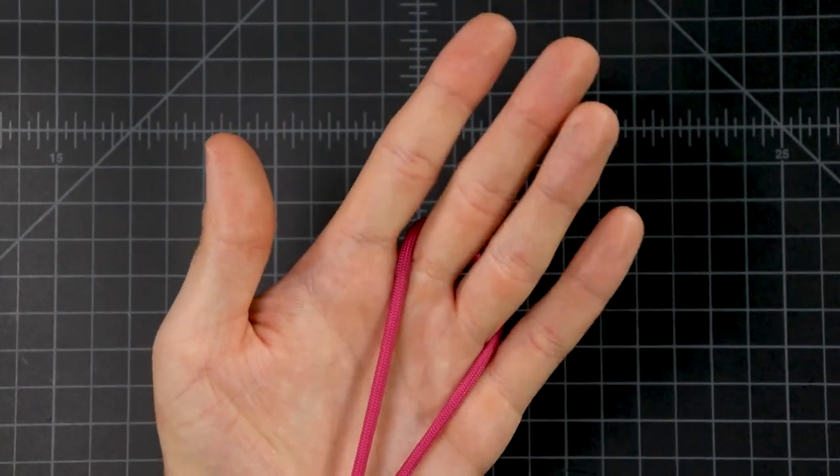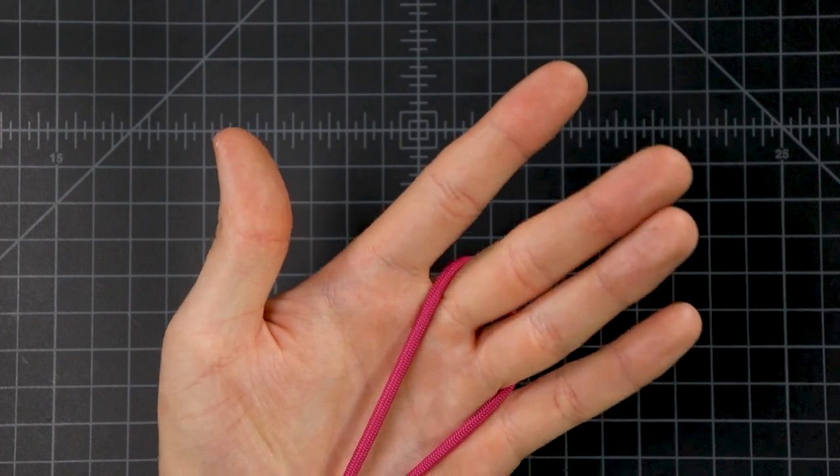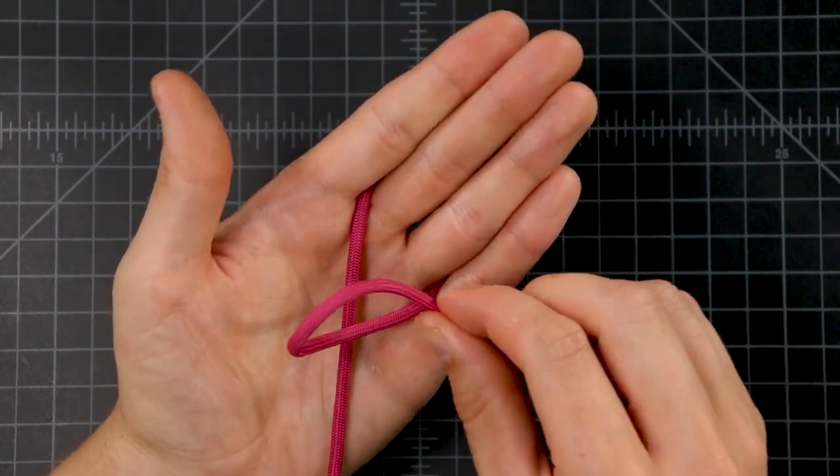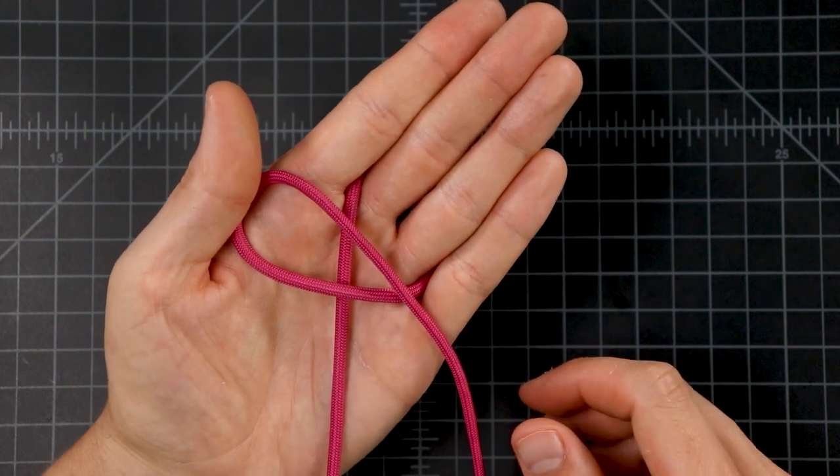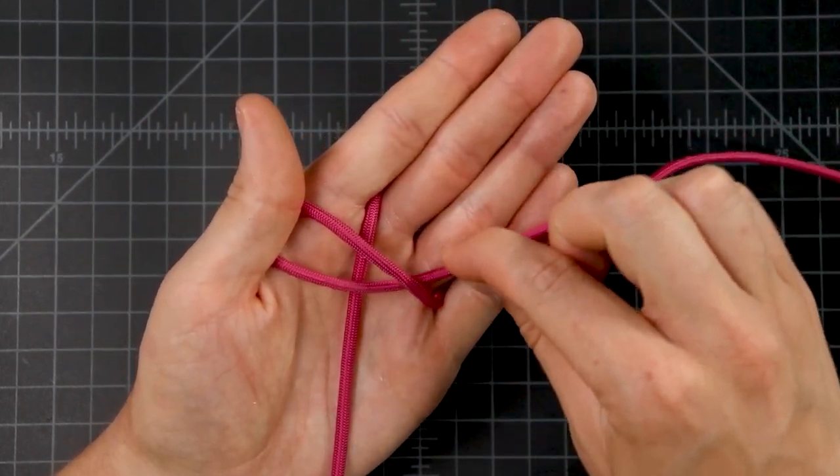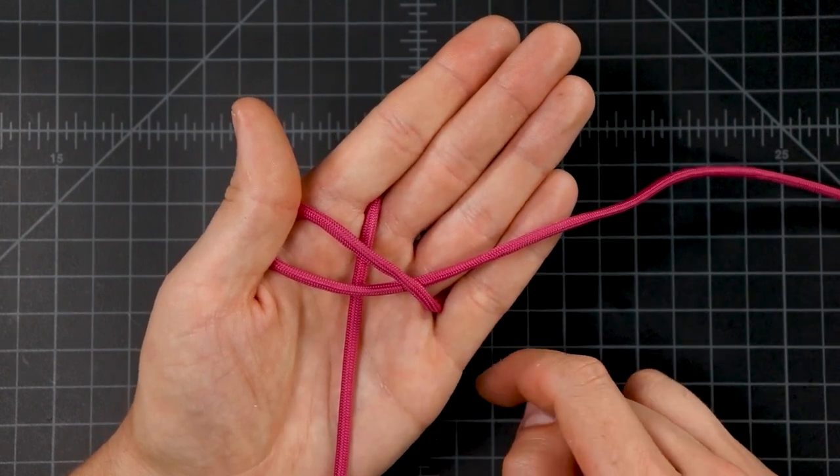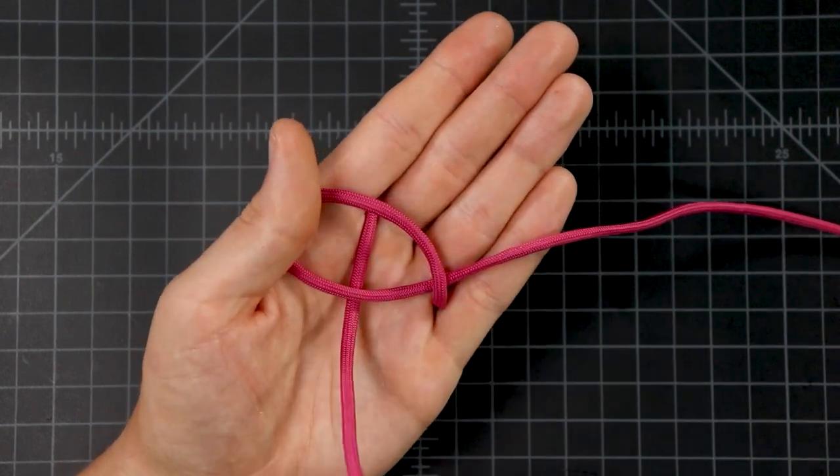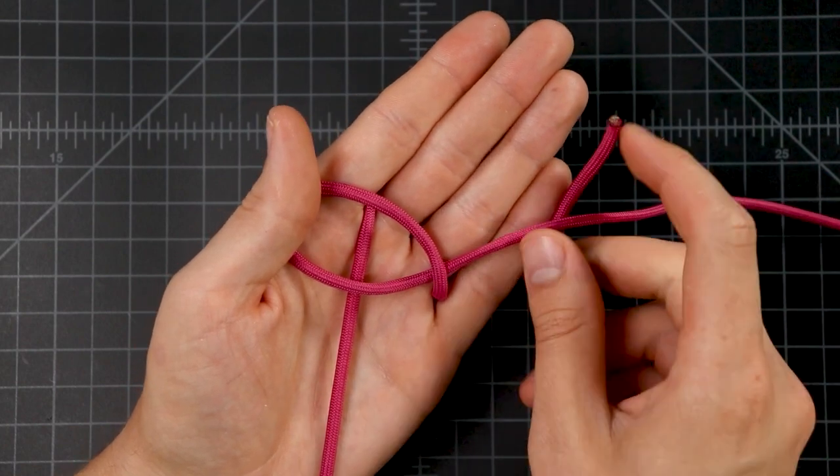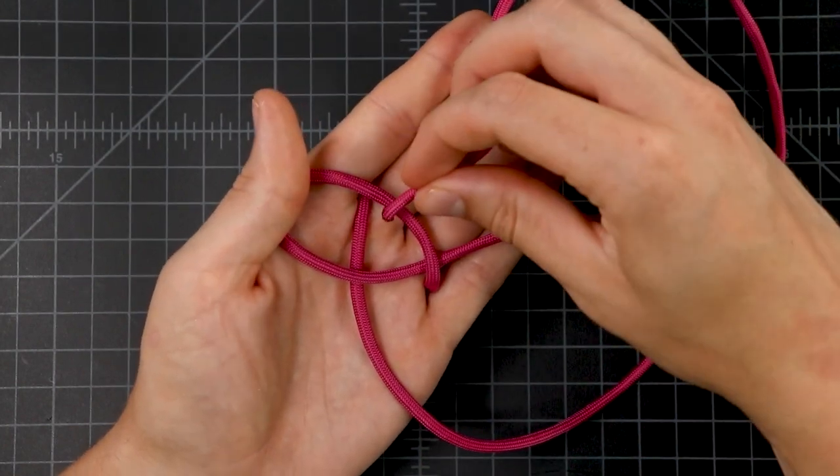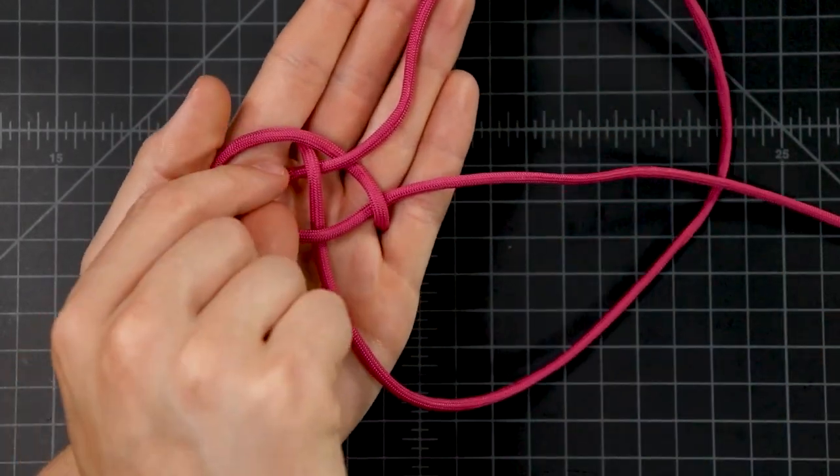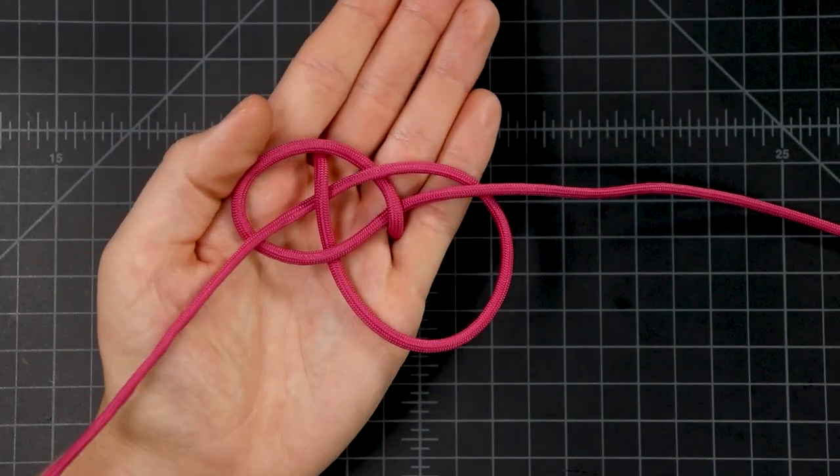We'll just take it and loop it around. I like to do middle finger and ring finger. Then grab our right side cord and make a loop across the top and then we actually fold that upwards so that our working end right here goes underneath the standing end. Then grabbing this bottom cord, bring it underneath our right side cord and then over this first one, under the second, and on top of the last one.